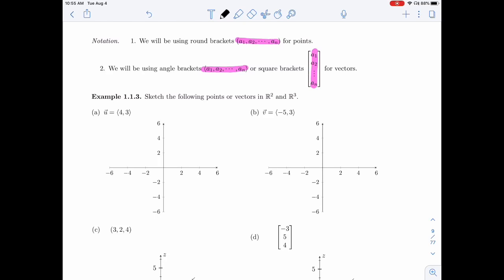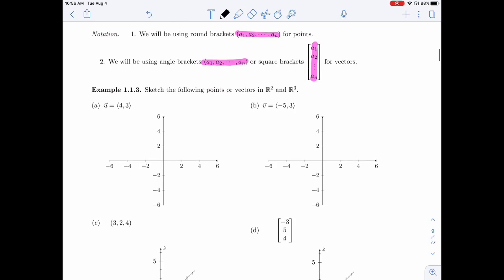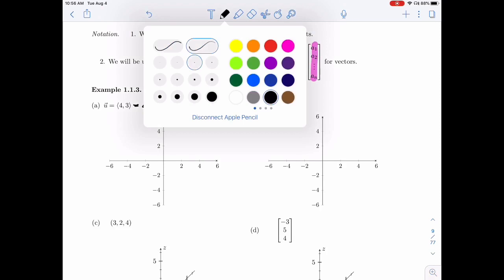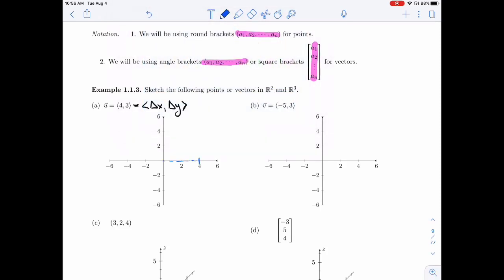Let's practice sketching vectors. In example 1.1.3, we're asked to sketch the following points or vectors in R2 and R3. So let's start in R2, that's easiest. So I want u to be 4, 3. Remember that's delta x, delta y. And so delta x of 4, that means I'm going to move to 4. Delta y of 3, I'm going to move up 3. So I have this box. I'm going to start at the origin, make this change in x, and then also make this change in y. So my vector looks like this, and that's the vector u.